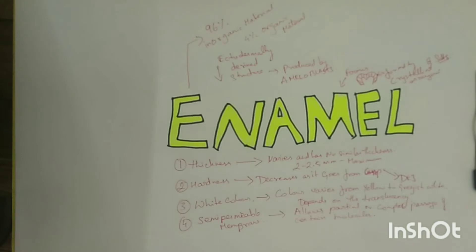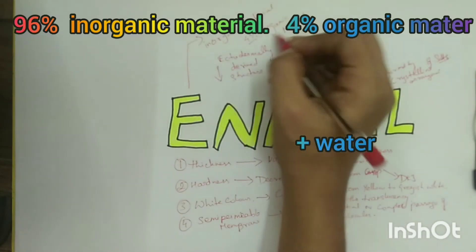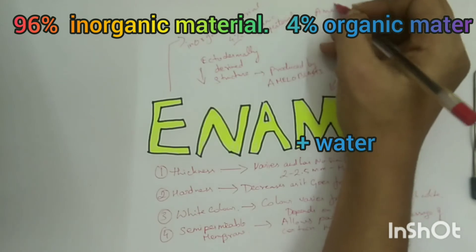We all know enamel is the strongest part, but what is it made up of? The enamel is made up of 96% inorganic material and 4% organic matter and water.